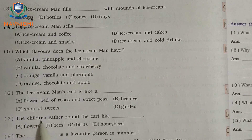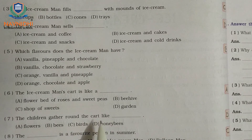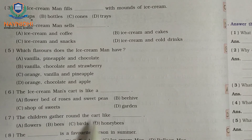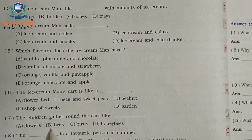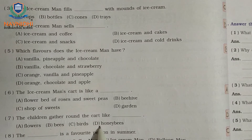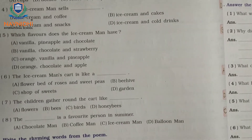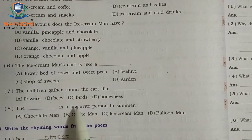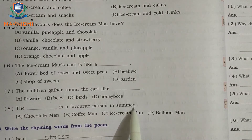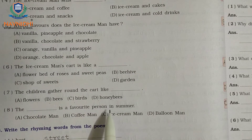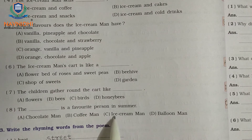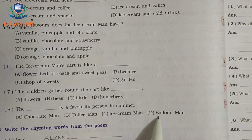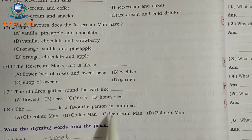Question 7: The children gather round the cart like — options: a) flowers, b) bees, c) birds, d) honeybees. Answer: d) honeybees. Question 8: The dash is a favorite person in summer. Options: a) chocolate man, b) coffee man, c) ice cream man, d) balloon man. Answer: c) ice cream man.